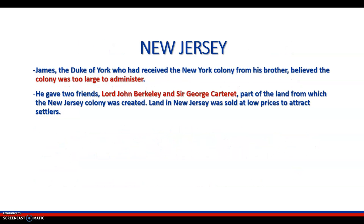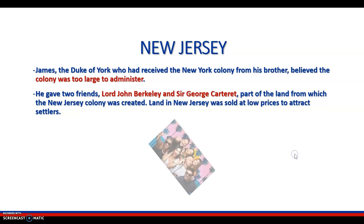New Jersey. James, the Duke of York, who received the New York colony from his brother, believed the colony was too large to administer. He gave two friends — Lord John Berkeley and Sir George Carteret — part of the land in which the New Jersey colony was created. The land in New Jersey was sold at low prices to attract settlers.